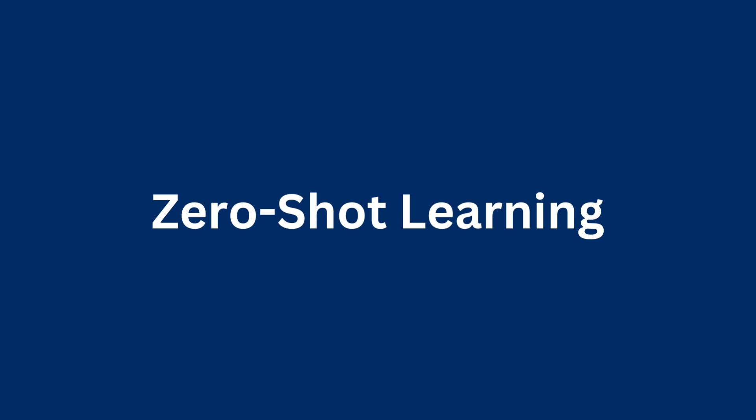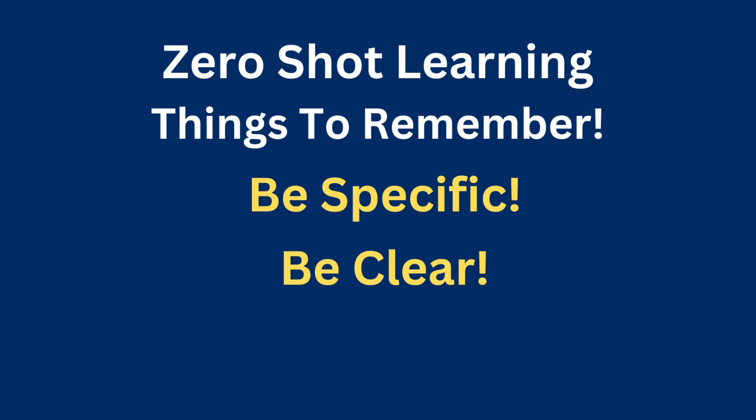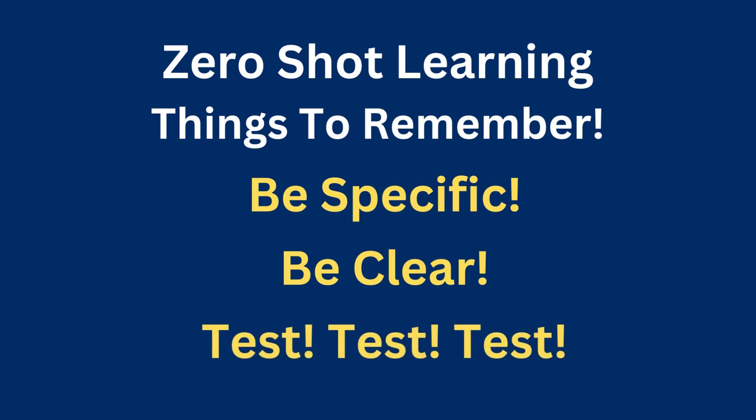That's what we're going to use today. When you're using zero-shot learning, there are three things to remember. Firstly, be specific — tell the AI specifically what you want it to do. Secondly, be clear. Clarity is the most important thing when talking to any AI. AI understands words and concepts, but it's not a person — if you aren't clear, you may get the wrong response. Many English words have two, three, or four different meanings, so unclear language leads to the wrong output. And finally, test it, test it, test it.